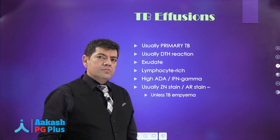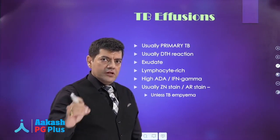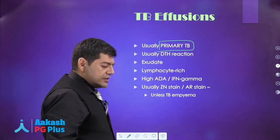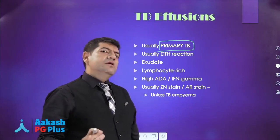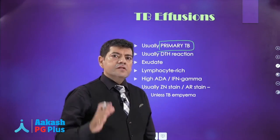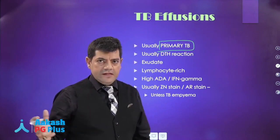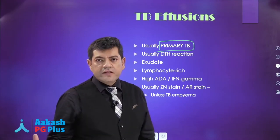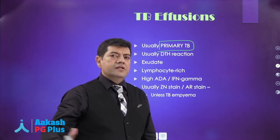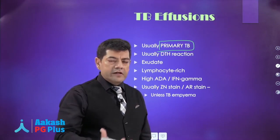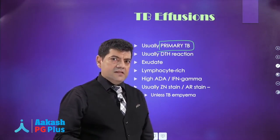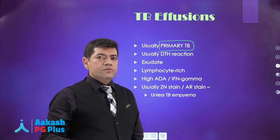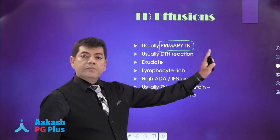Next we discuss tubercular effusions — the most common cause of an exudative effusion in our country and most developing countries. It is usually a part of primary TB, though it does occur in secondary TB as well. Primary TB occurs usually in kids or in areas where the prevalence of TB is low. Secondary TB involves a long latent phase, after which bacilli get reactivated or the patient gets reinfected. Tubercular effusions are more commonly part of primary tuberculosis.